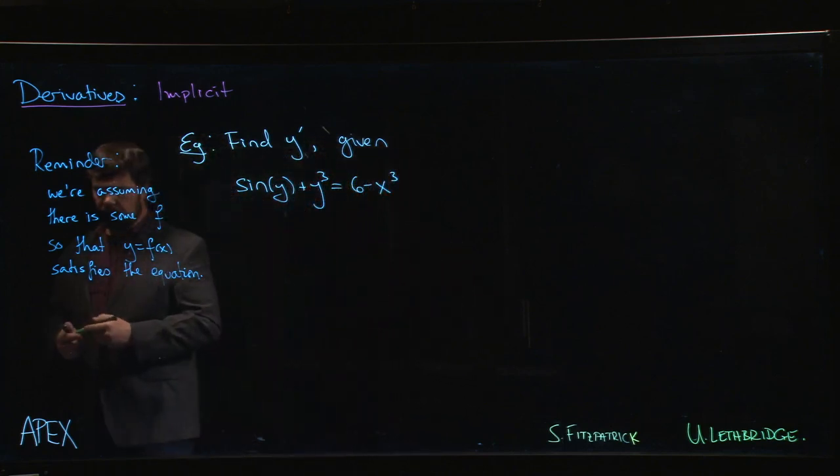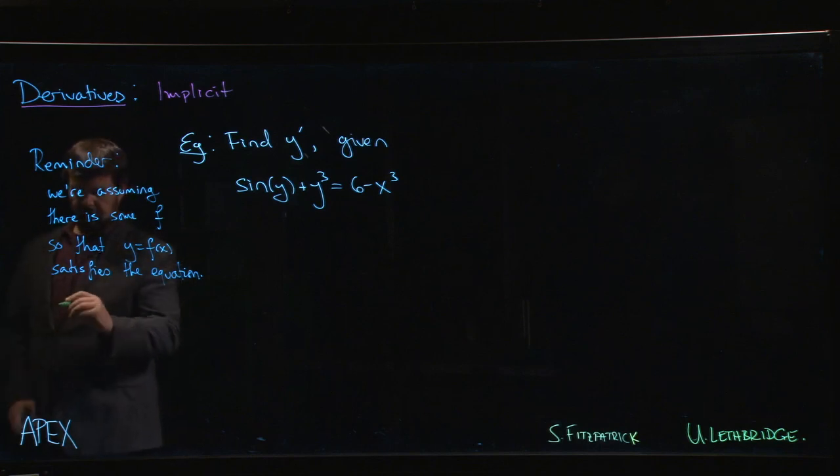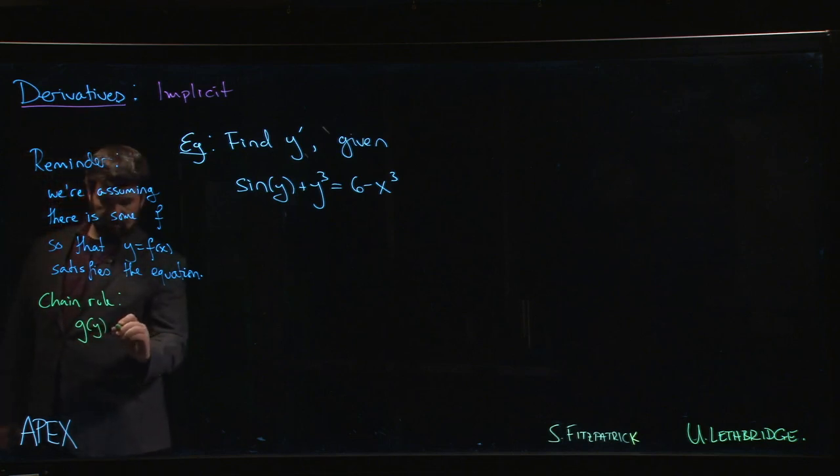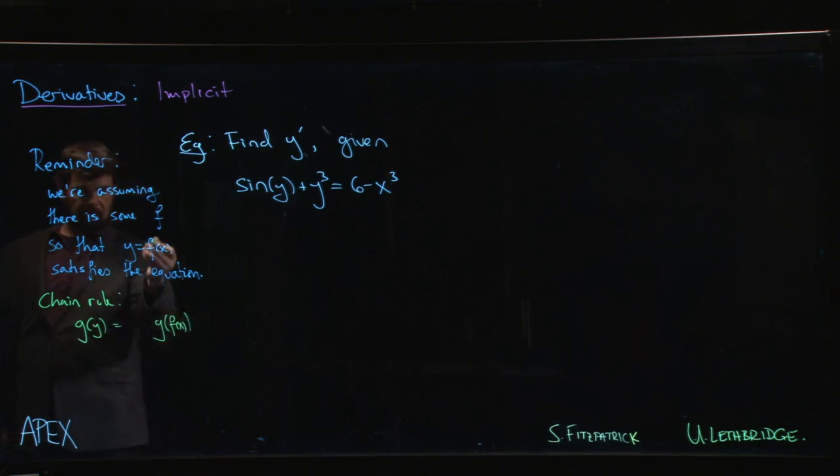And then with that assumption, we rely on the fact that the chain rule then dictates that if you have some function of y, well, that's really a function of x because we're thinking of y as a function of x.